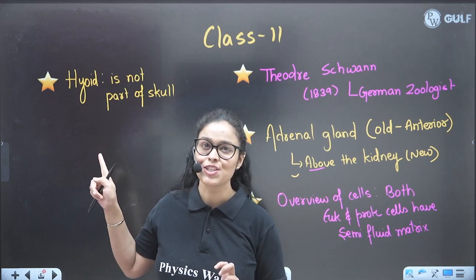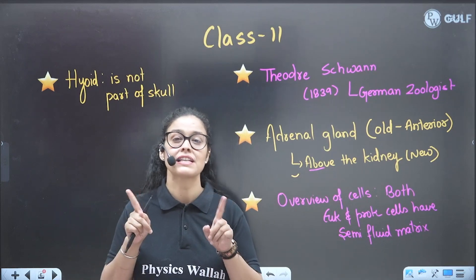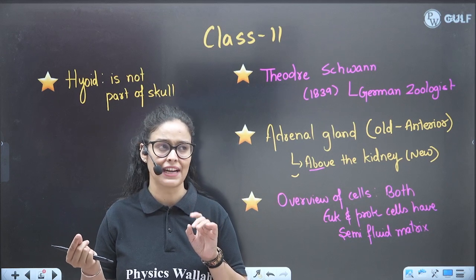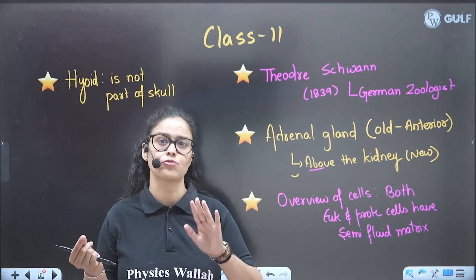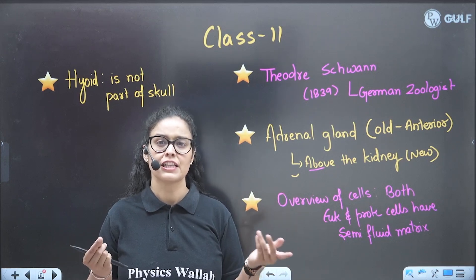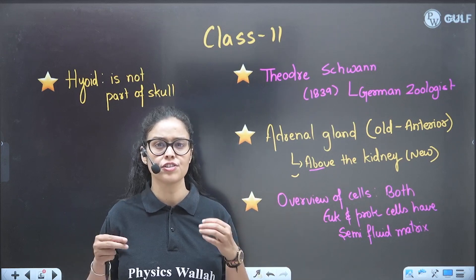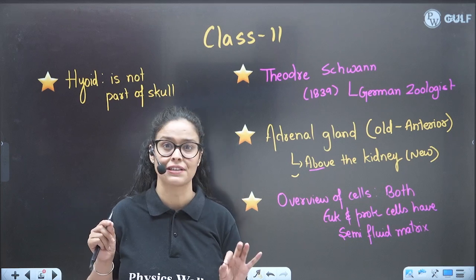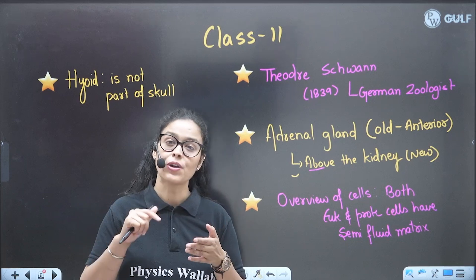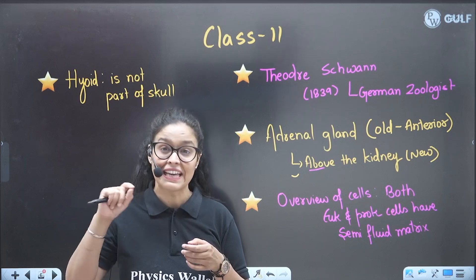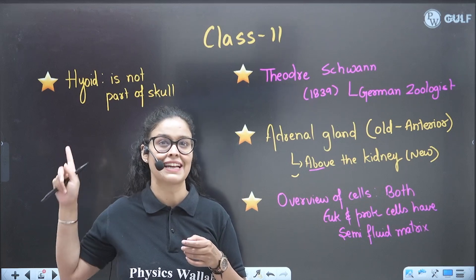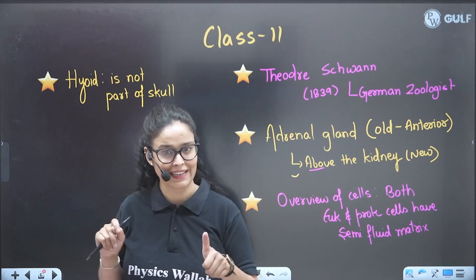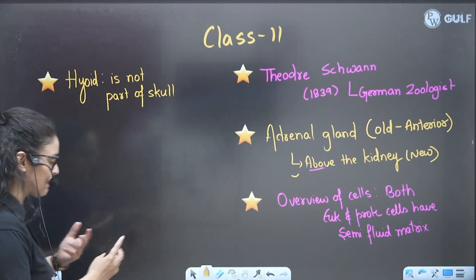The last one is that the hyoid is not part of the skull. If you read your old NCRT — that means the T24 edition or before — you will find that hyoid is mentioned as part of the skull. But now in 2025, they clearly mention that hyoid is not part of the skull. It's a separate bone.